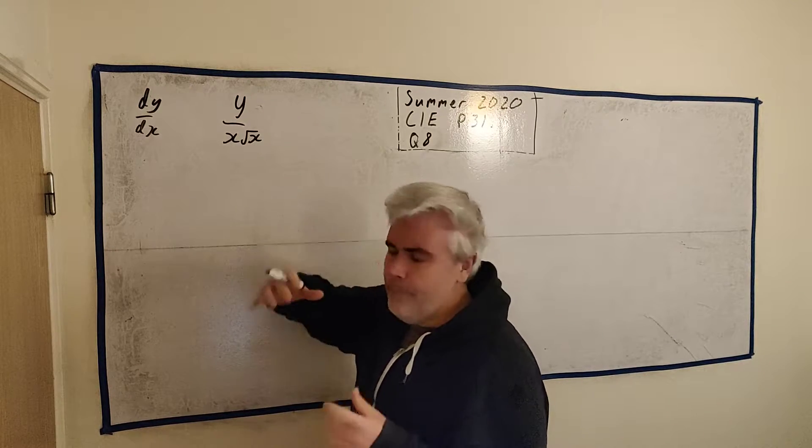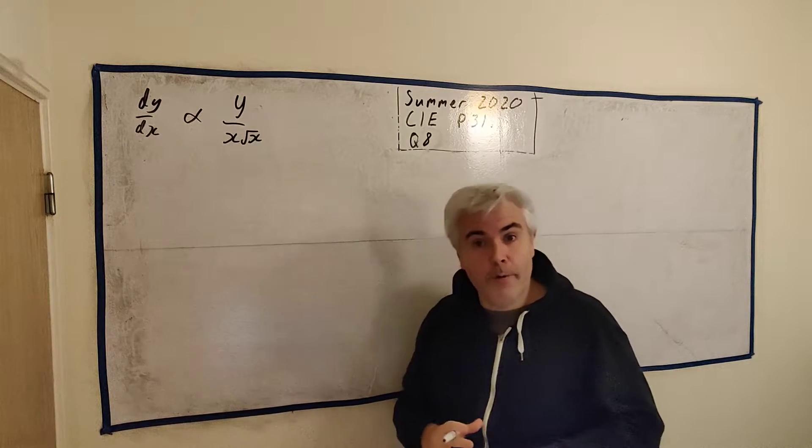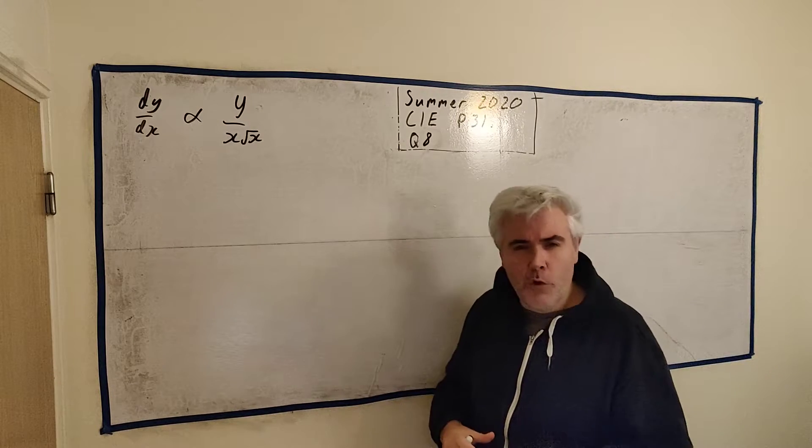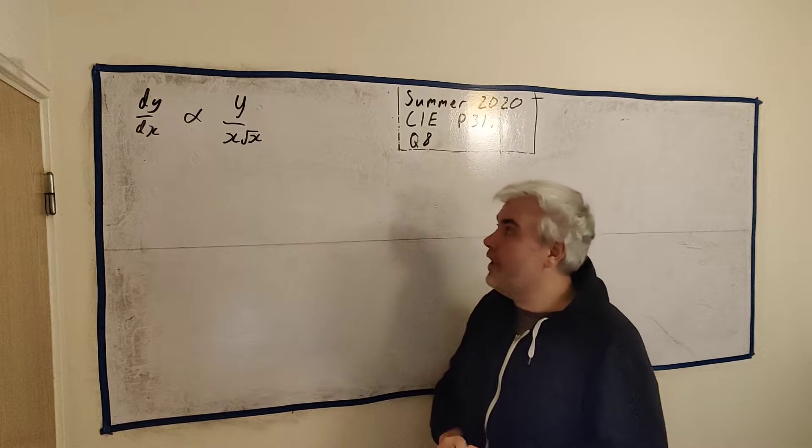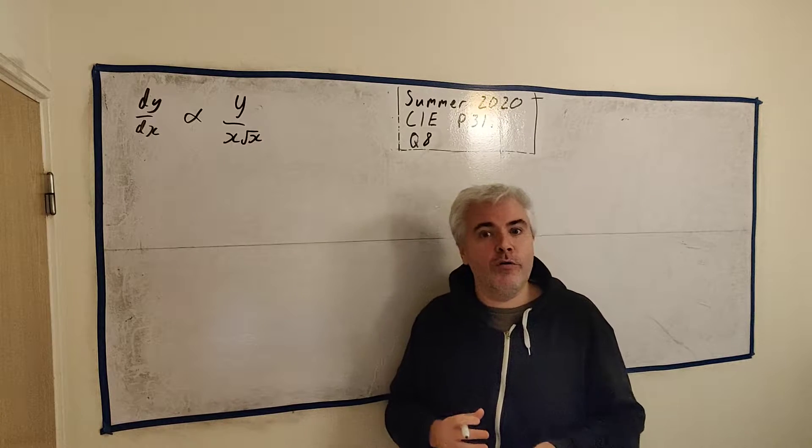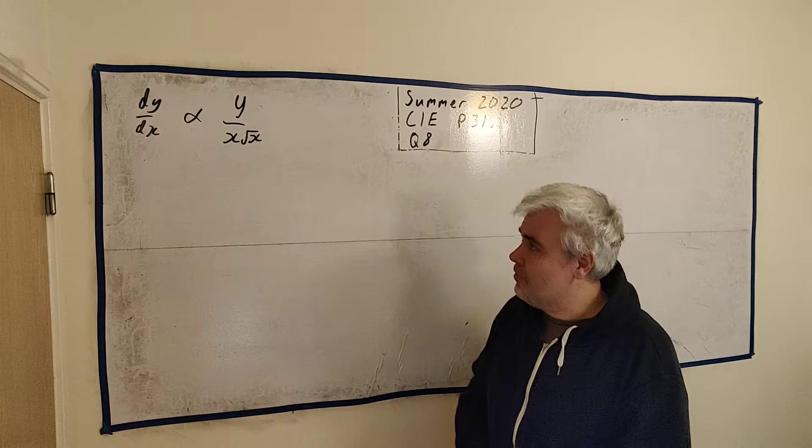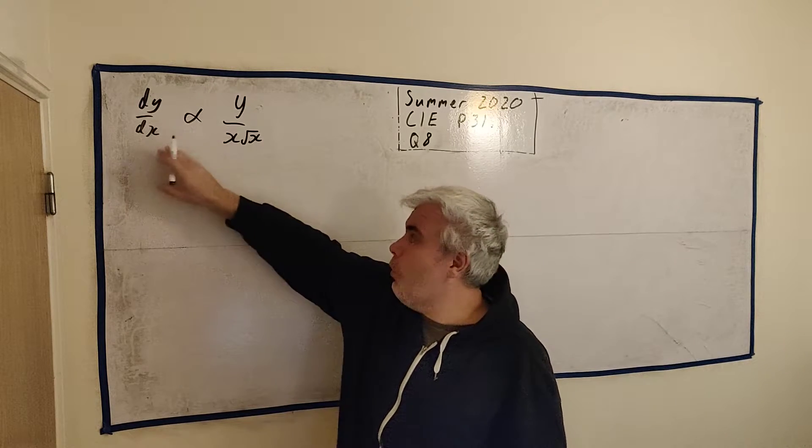And they tell you this. So the bit that a GCSE student would know is proportional. We learn about proportional when you're younger, but we don't remind you too much. It pops up in a few exam questions. But that's what it looks like. That's when they tell you something's proportional.